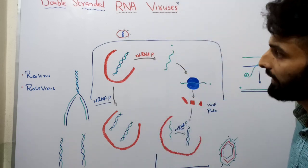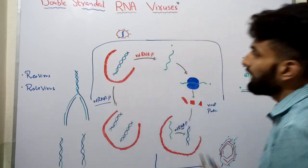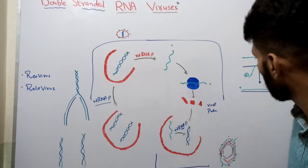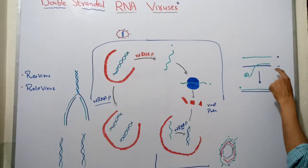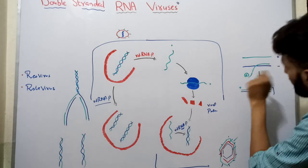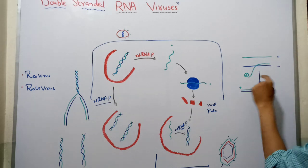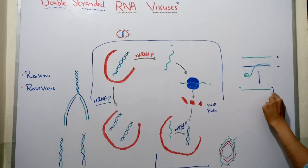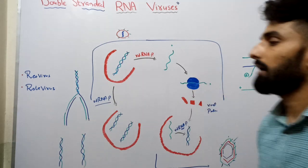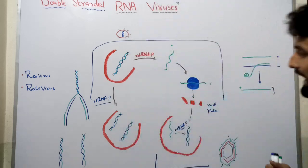With the help of its transcriptase activity, the RNA-dependent RNA polymerase will convert the double-stranded RNA into a positive single-stranded RNA. For this purpose it will use the negative strand and synthesize a positive-sense RNA.